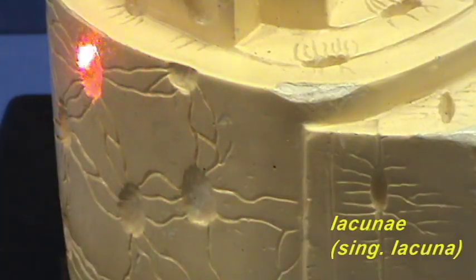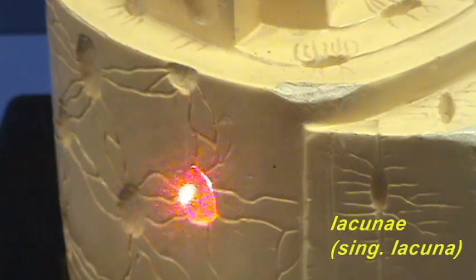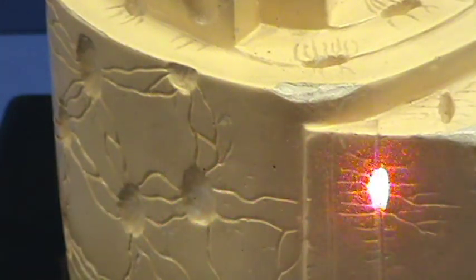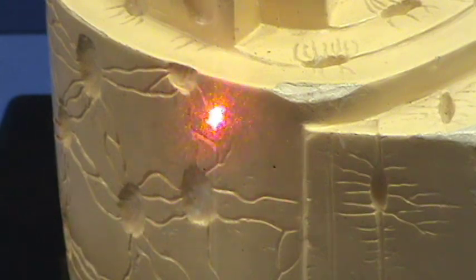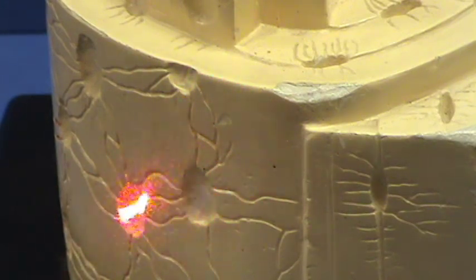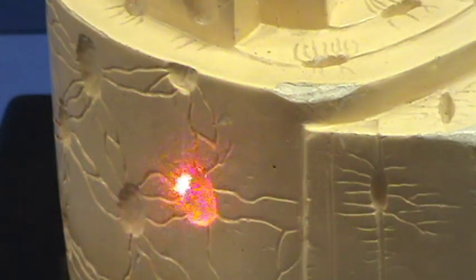We have lacunae represented here that would be occupied by the osteocytes. Notice also that we have these channels that are interconnecting the lacunae. These channels are the canaliculi.